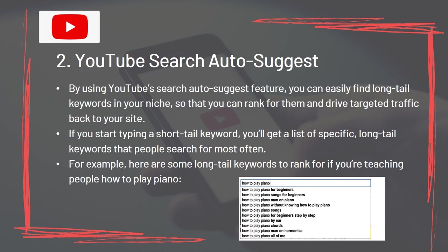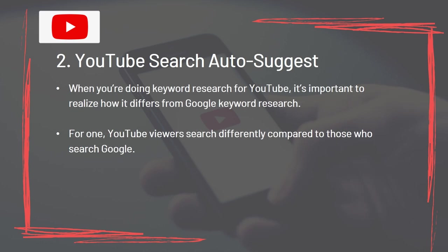Tool 2: YouTube Search Autosuggest. By using YouTube's Search Autosuggest feature, you can easily find long-tail keywords in your niche to rank them and drive targeted traffic to your site. If you start typing a short-tail keyword, you'll get a list of specific long-tail keywords that people search for most often. It's important to realize how YouTube keyword research differs from Google keyword research, as YouTube viewers search differently.